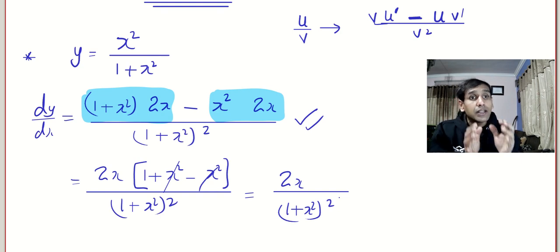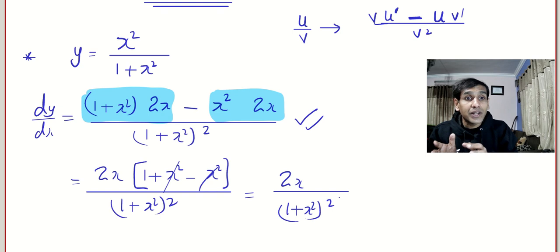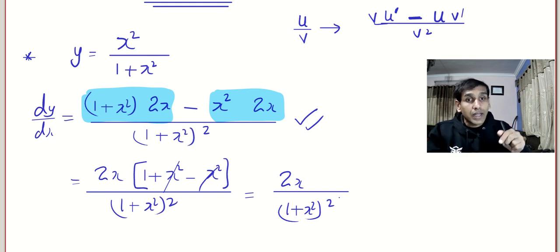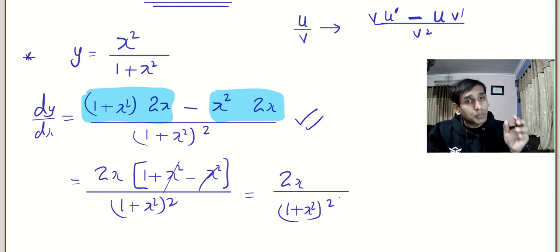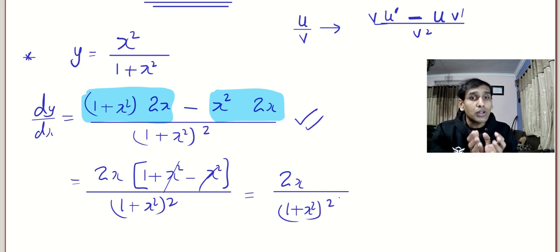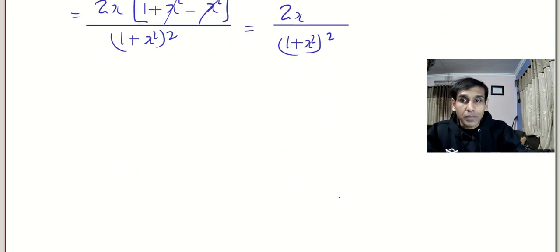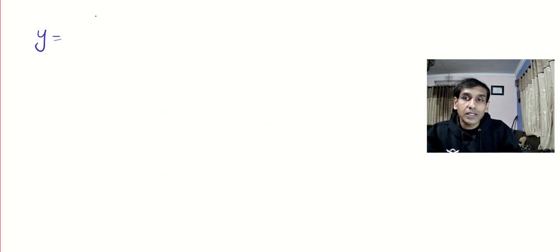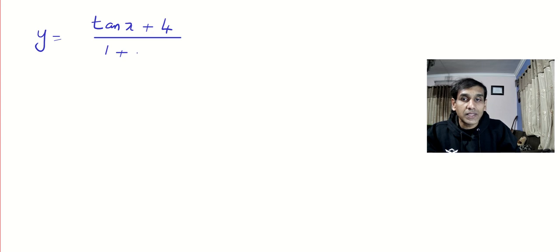This is something you learned in class 11, but we need every technique from class 11 and 12. If you were not good at differentiation and integration, take your class 11 or class 12 textbook and revise right now. Spend 5 to 10 days on that revision, because engineering requires a lot of integration and differentiation — both in mathematics and in your applied subjects. Here is one question for you to practice: differentiate (tan x · (tan x + 4)) / (1 + log x).